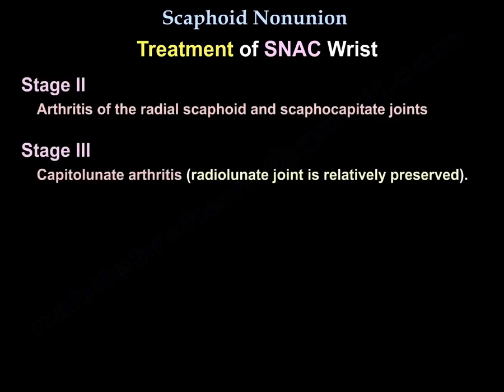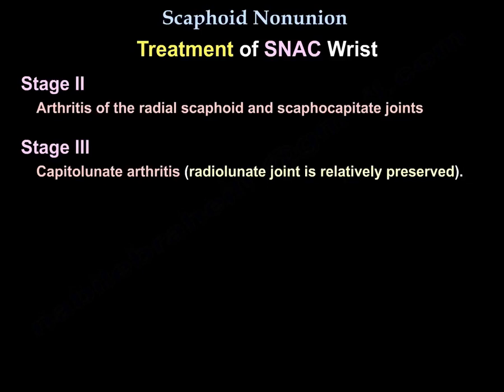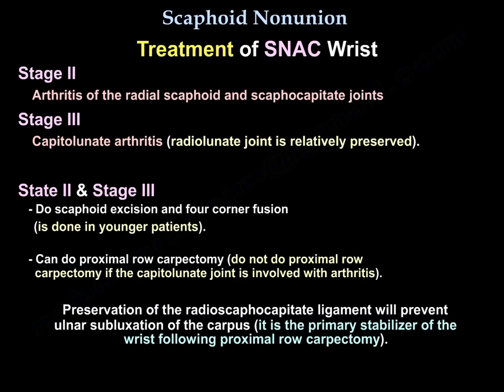Stage 2 involves arthritis of the radioscaphoid and scaphocapitate joints; stage 3 adds capitolunate arthritis. In stage 2 and 3, you can do scaphoid excision and 4-corner fusion, which is preferred in younger patients. You can also do proximal row carpectomy, but do not perform it if the capitolunate joint is involved with arthritis. The radioscaphocapitate ligament must be preserved as it prevents ulnar subluxation of the carpus and is the primary stabilizer of the wrist following proximal row carpectomy.